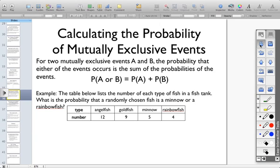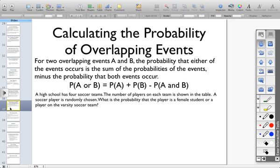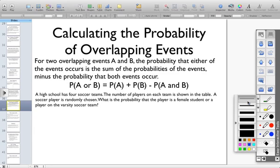Now let's take a look at overlapping events. We calculate the probability in pretty much the same way as we do mutually exclusive events, but we want to subtract out the overlap, because otherwise we would accidentally count those values twice.